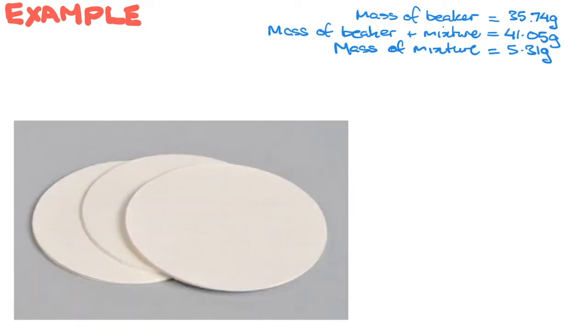Now we filter, but before we begin we must ensure that our filter paper is heated, dried, and weighed multiple times for consistency. This is to ensure that water is not part of the mass. So let's say the mass of our filter paper is 0.95 grams.